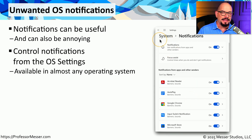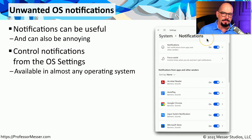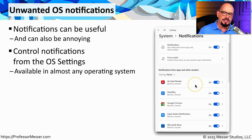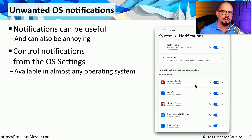On Windows, you'll find these in the System app under the Notifications option, and you have the choice to enable or disable all notifications, or go into individual applications and choose which apps you would like to receive notifications from.